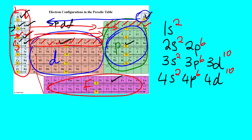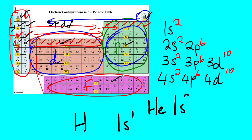Now suppose you are looking for the electron configuration of hydrogen. We look at hydrogen — it's in group number one and is the first element under the S orbital. So the electron configuration will be 1S¹. And then for helium it will be 1S².